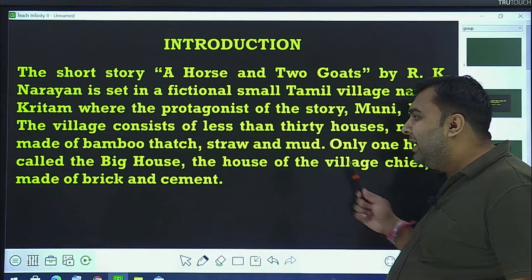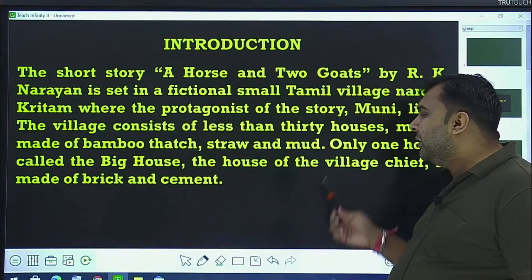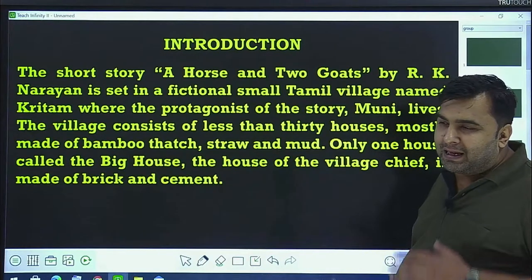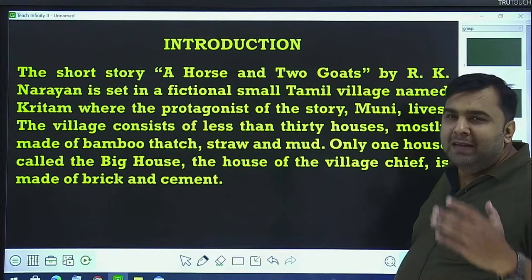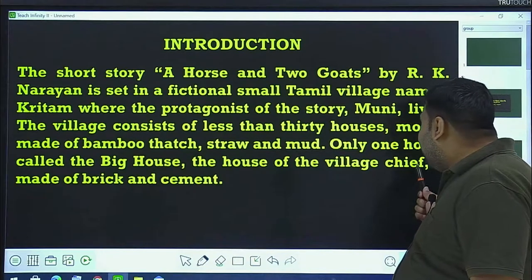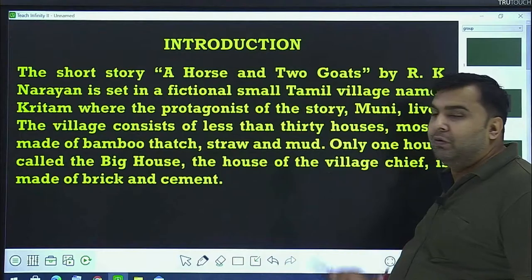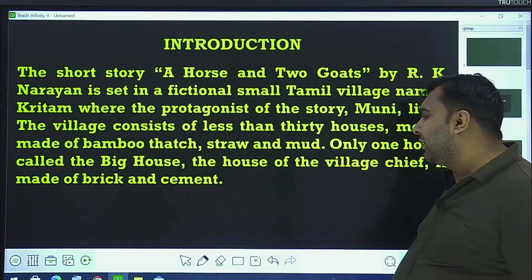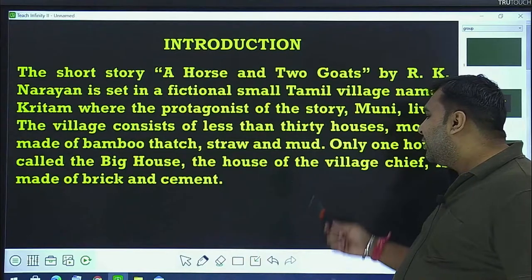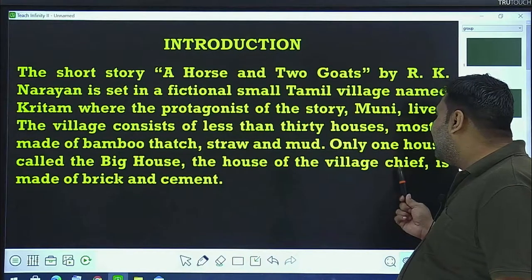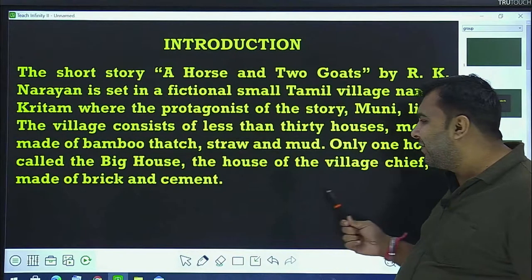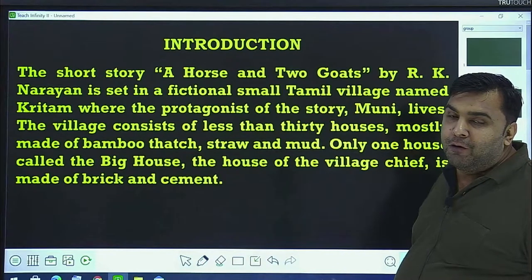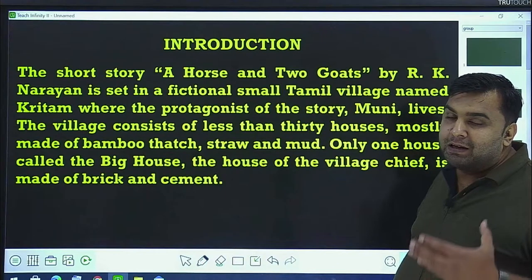The village consists of less than 30 houses, mostly made of bamboo thatch, straw and mud. Only one house is called the big house — the house of the village chief — because it is made of brick and cement.